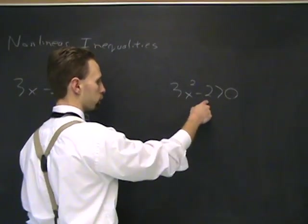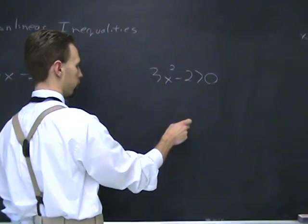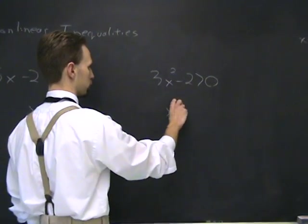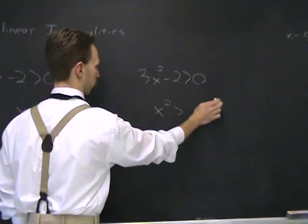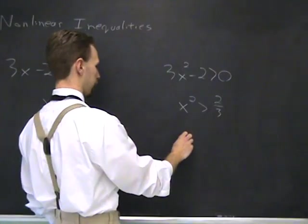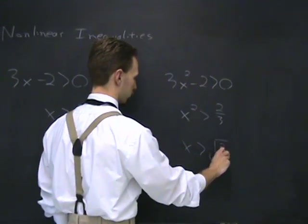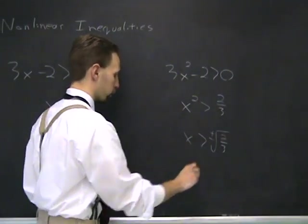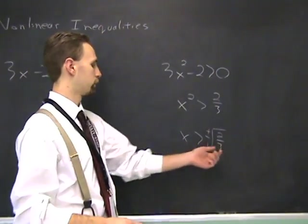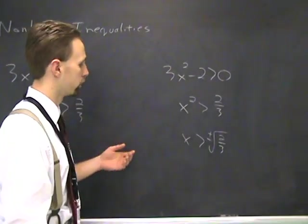For example, when you go to solve x²-2>0, you might be tempted to bring over the 2 and divide by 3, which leaves students with x² > 2/3. And then what do you do after that? A lot of times I get x is greater than the square root of 2/3, plus or minus. But what does that actually mean? There are two different numbers here. Is x greater than one or both? What's the story?